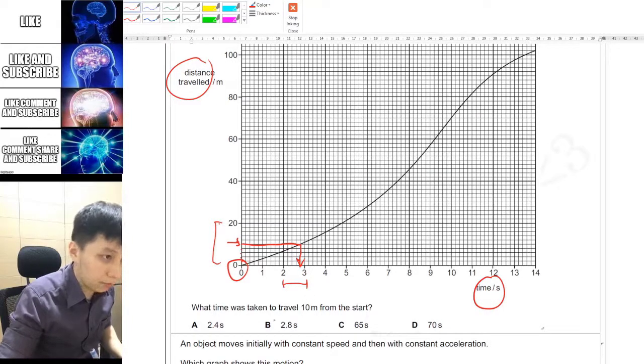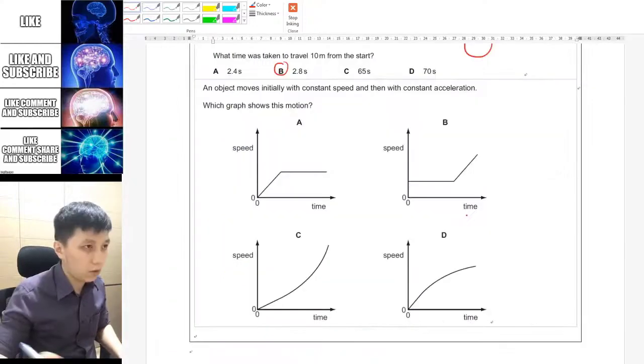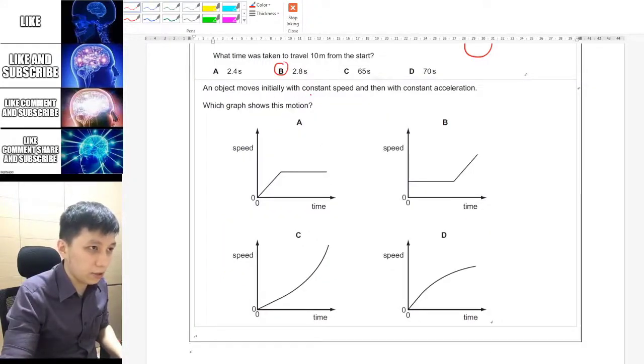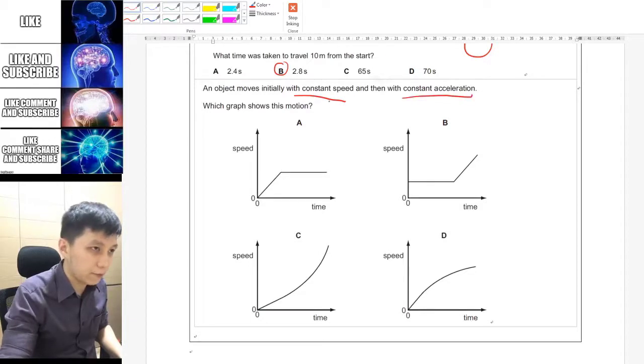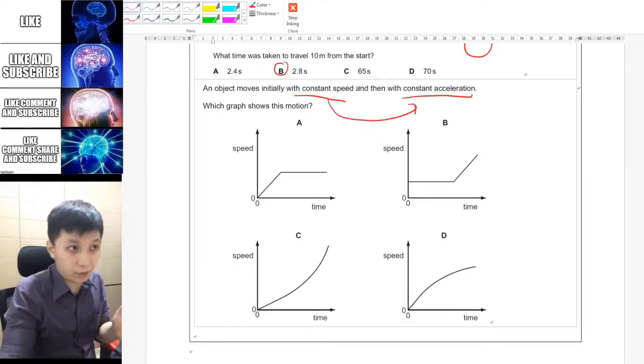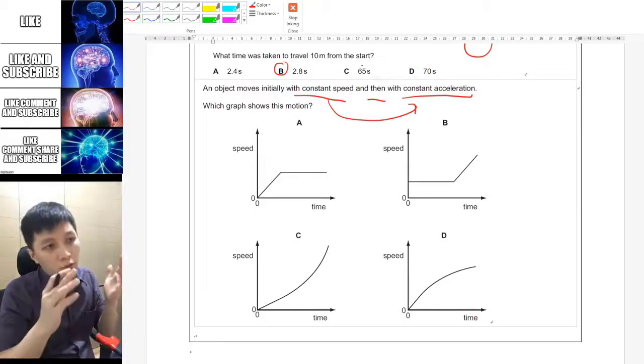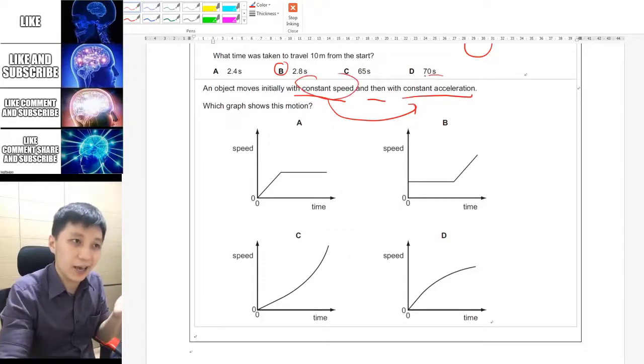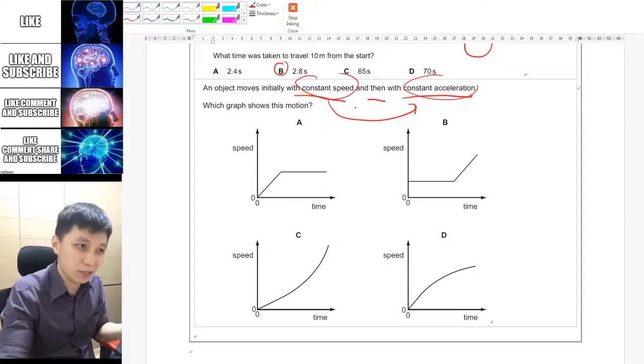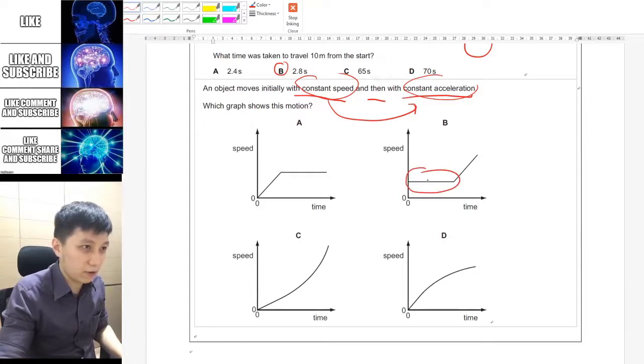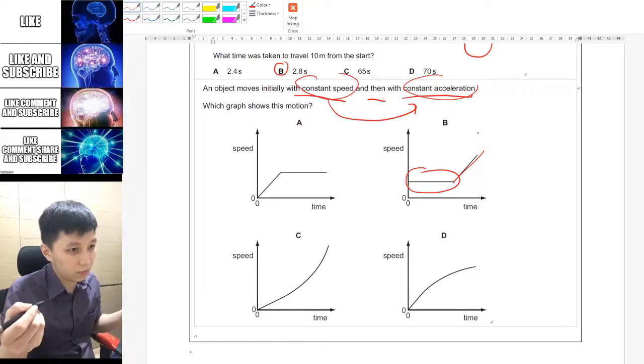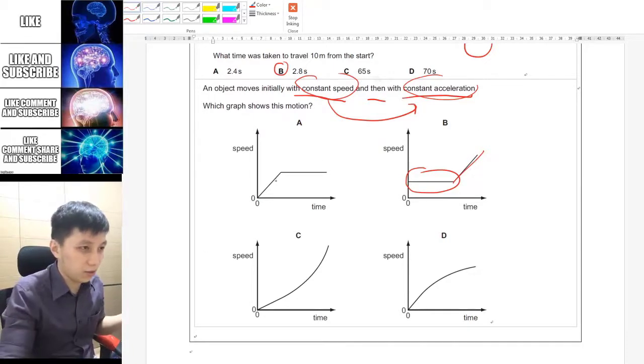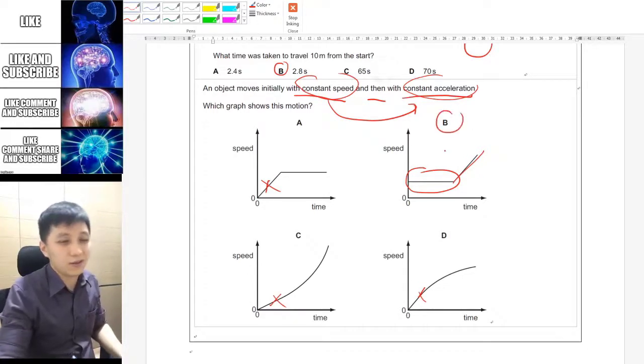If you look at this, this is from 2 to 3 with 5 grids, so each grid should be worth 0.2. That means the answer should be 2.8 seconds. Lastly, it said there's an object moving initially with constant speed and then constant acceleration. Obviously these are not happening at the same time. From the physics perspective, one thing cannot be moving at constant speed and acceleration at the same time. If you have constant speed, then your acceleration would be zero. I think this one is the one that we have constant speed and then acceleration, so the only answer is B.